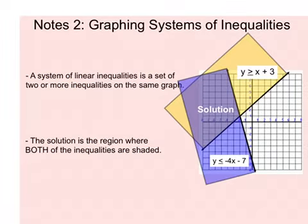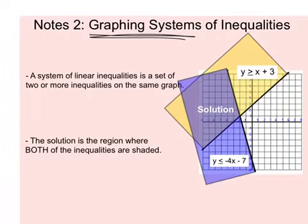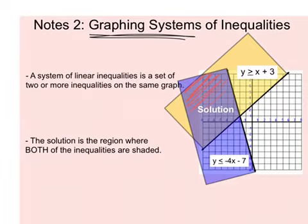We looked at graphing inequalities back in unit 1, so the difference now is we're talking about graphing systems. A system is a set of two or more inequalities on the same graph. The solution set before was just the one spot where it was shaded, but now we're looking for the spot where both colors are shaded in. So my solutions would be all of the ones where there would be the purple and the yellow, which would be that red there — that would be my solution.